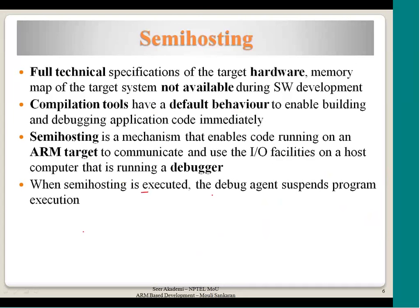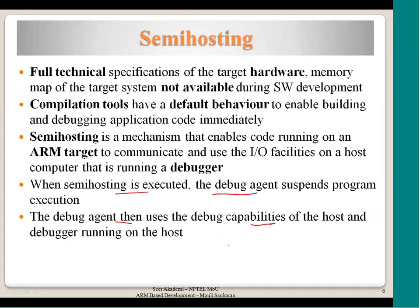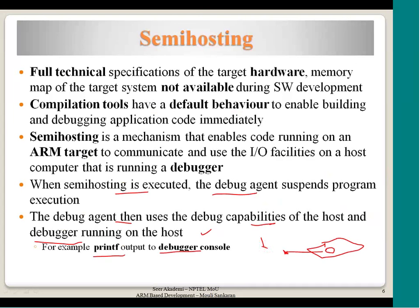When semi-hosting is executed, the debug agent suspends program execution and gives control to the debugger. The debugger uses the debug capabilities of the host. For example, print output goes to the debugger console. You can set breakpoints — execution stops, control returns to the debugger, and when you say 'run,' control goes back and execution continues until the next breakpoint or single-step instruction. This is all controlled by the debugger and the user debugging the software on the PC.